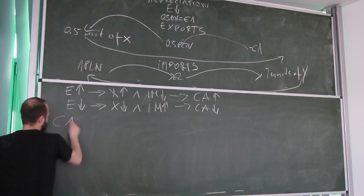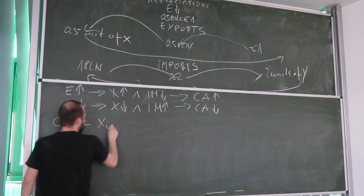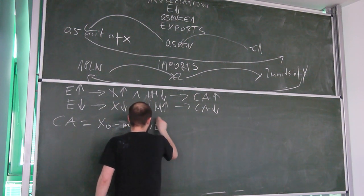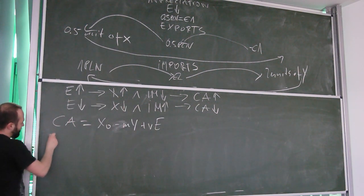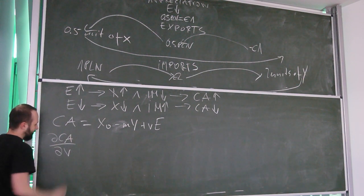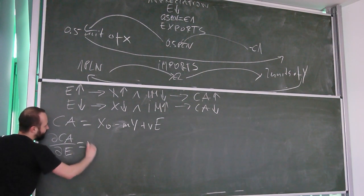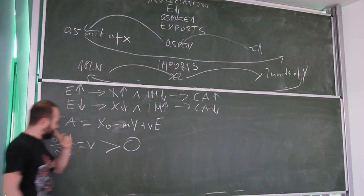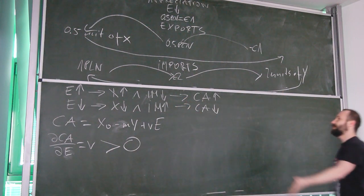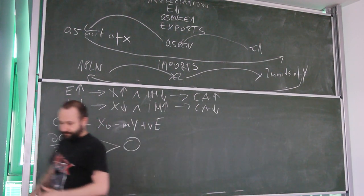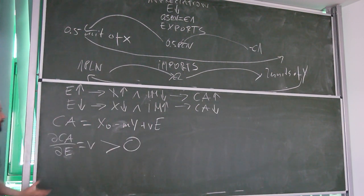Remembering that the current account is given by X₀ minus m times Y plus v times E, the partial derivative of the current account with respect to exchange rate E is equal to v. So v should be positive, because when exchange rate depreciates — E goes up — the current account improves. This is all we need to build the new IS function.